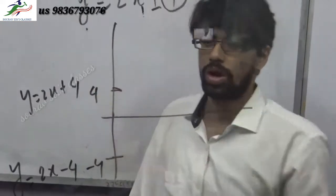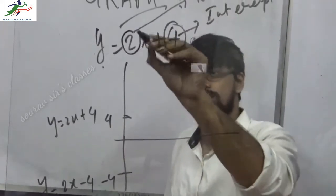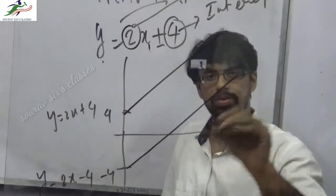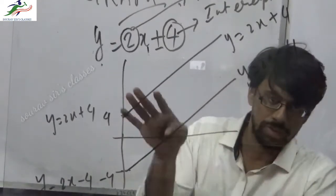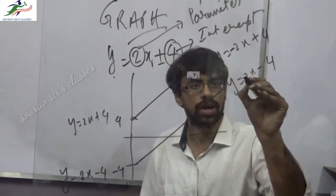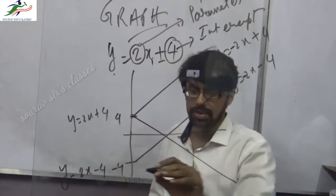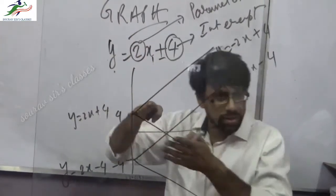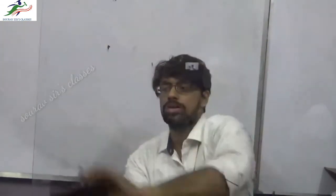If I draw the graph for 2x plus 4, since the slope 2 is positive, the graph slopes upward. For y equals 2x minus 4 versus y equals 2x plus 4, these two graphs are parallel but shifted. Now if I change the slope to minus 2x, the curve slopes downward. Whenever the slope is positive the line goes up; when negative it goes down — that's the first criteria.